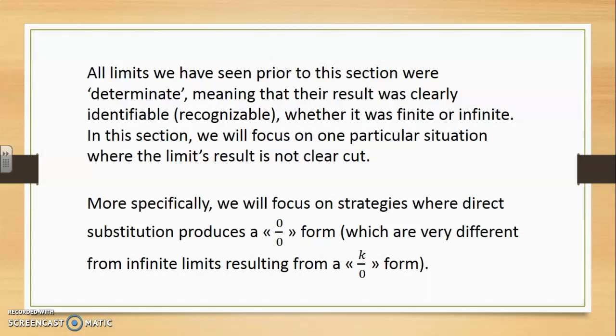All limits we had seen in prior sections were determinate, meaning that their result was clearly identifiable, whether it was a finite number or an infinite number. In this section we're going to focus on one particular situation where the limit's result is not clear-cut at all. More specifically we're going to focus on strategies where direct substitution produces a 0 over 0 form. Remember, 0 over 0 will be very different from infinite limits that result from, for instance, a k over 0 form.